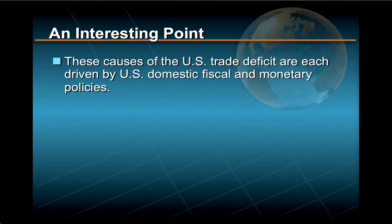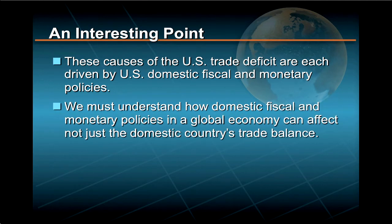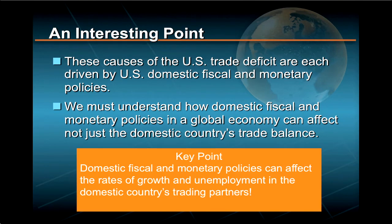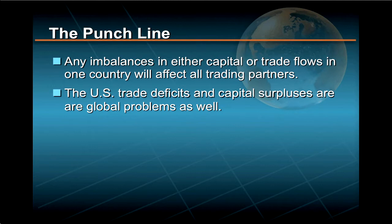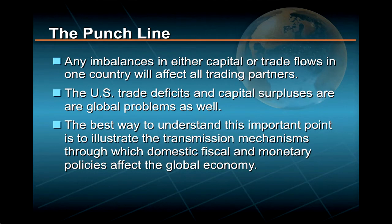These two major causes of the U.S. trade deficit are each driven in some degree by U.S. domestic fiscal and monetary policies. Because this is so, we must understand how the conduct of domestic fiscal and monetary policies in a global economy can affect not only the domestic country's trade balance, but can also significantly affect the rates of growth and unemployment in the domestic country's trading partners. Any imbalances in either capital or trade flows in one country will affect all trading partners. U.S. trade deficits and capital surpluses are not just domestic headaches — they are global problems as well.